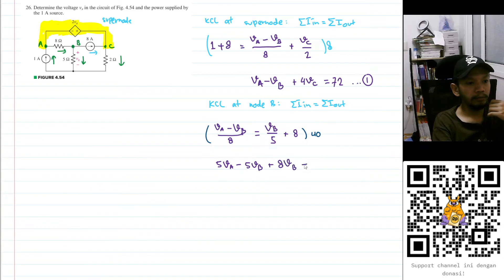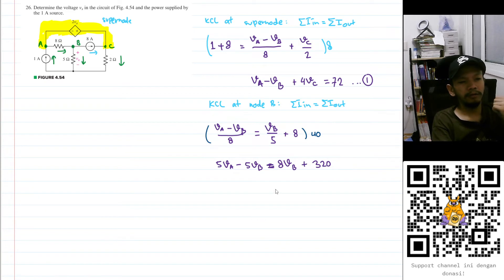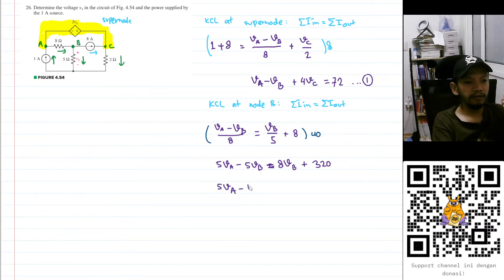After multiplying through by 40, we have 5·Va − 5·Vb = 8·Vb + 320. Moving 8·Vb to the left side gives 5·Va − 13·Vb = 320. This is equation number two.